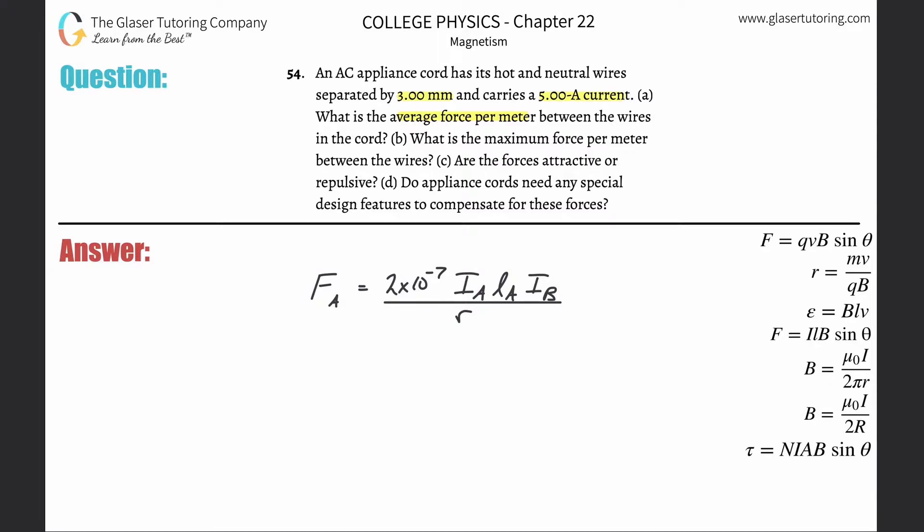So it says that the force acting on wire A is equal to 2 times 10 to the minus 7, multiplied by the current in wire A times the length of wire A times the current in the other wire, meaning wire B, divided now by R, or the R represents the distance between them. So if I want to find the force, it's asking for the force per meter. I have to divide, just like in the last problem, I got to divide the length of A out. And now if you notice, this is newtons per meter or force per meter.